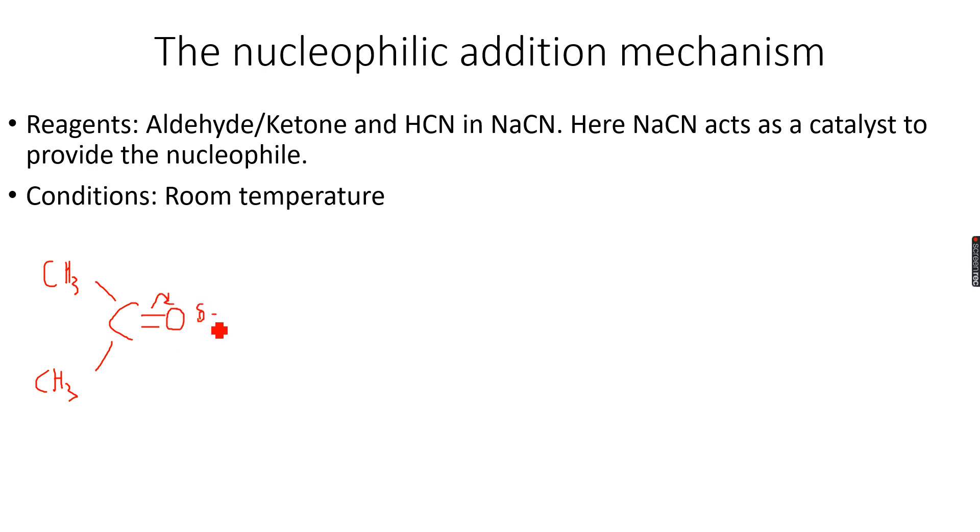So let's take propanone, then CN-. This is the first step. In the first step there is an attack from the CN- on the partially positive carbon atom which gives us the intermediate.